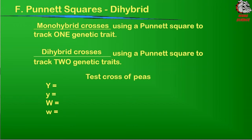In this video, my intention is to teach you how to do a dihybrid cross, which is a cross where you're looking at two different traits. Monohybrid crosses are keeping track of one particular trait, and you should be familiar with how to do simple Punnett squares with those. In these Punnett squares, we're going to be looking at two different traits, and these will be the larger Punnett squares — 16 cells total.